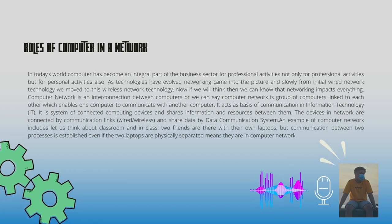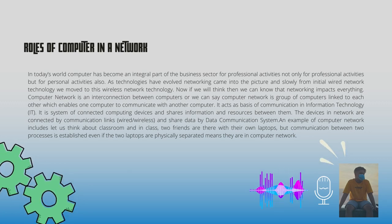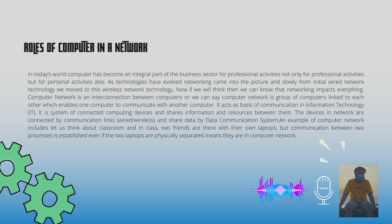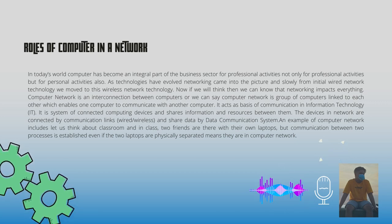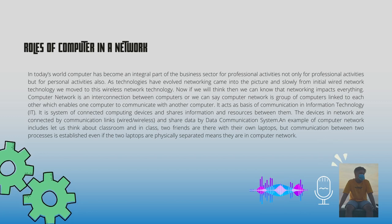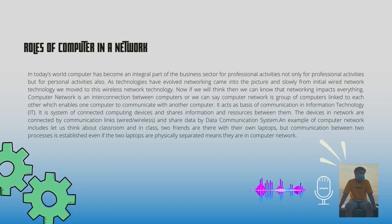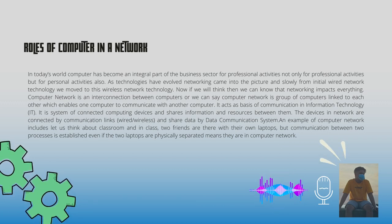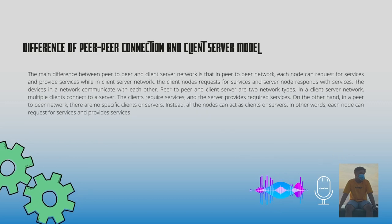A computer network is a system of connected computing devices that shares information and resources between them. The devices in a network are connected by communication links, either wired or wireless, and share data via a data communication system. As an example, consider a classroom where two friends each have their own laptops — communication between them is established even if the two laptops are physically separated, meaning they are in a computer network.